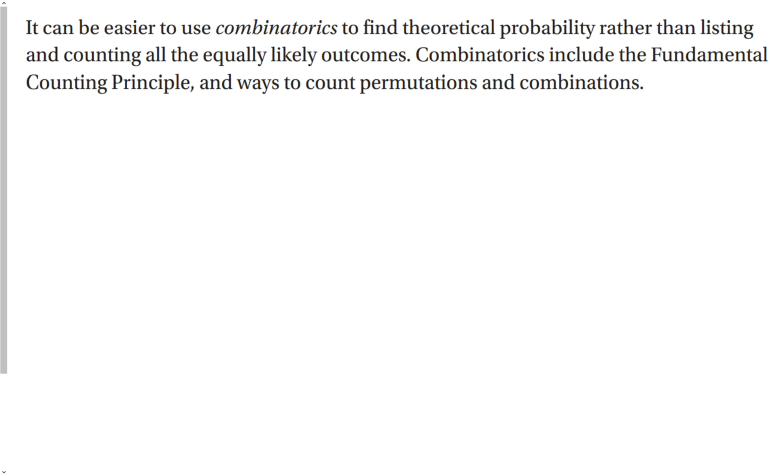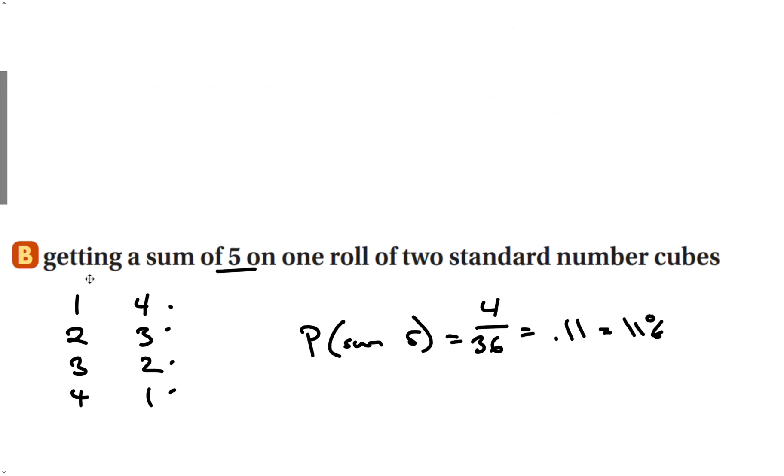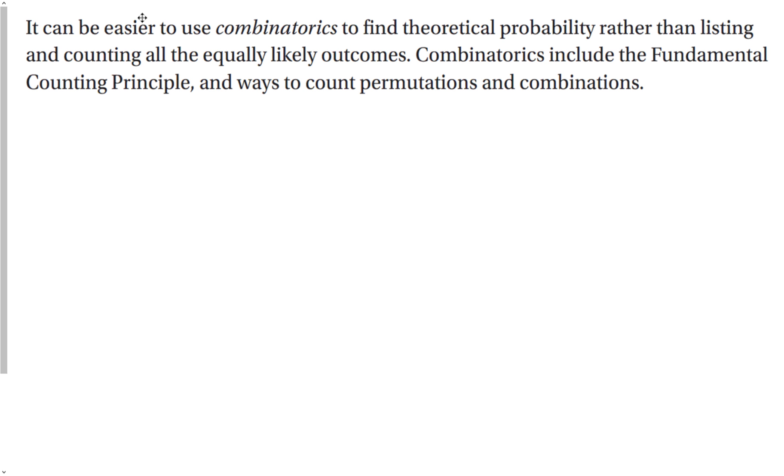It can be easier to use combinatorics to find theoretical probability rather than listing and counting. That's what we were just doing here. We were listing and counting all the different possible ways to get a sum of 5. That's good for something like a dice, which doesn't have that many options, but if there's something with a lot more options, this technique of using combinatorics is maybe a little bit better. Combinatorics include the fundamental counting principle and ways to count permutations and combinations.